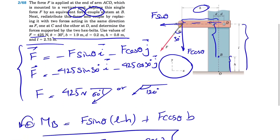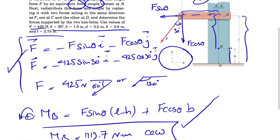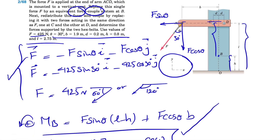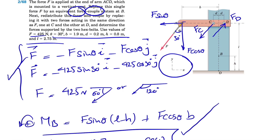In part two, two different forces are applied at C and D. These two forces must produce the same couple and must act in the same direction as F — making the same angle theta with the vertical. We need to determine the direction of each force to produce that counterclockwise moment. One force acts in one direction and the other in the opposite direction, calling them Fc and Fd. Fc must be greater than Fd to produce the net counterclockwise moment about point B.